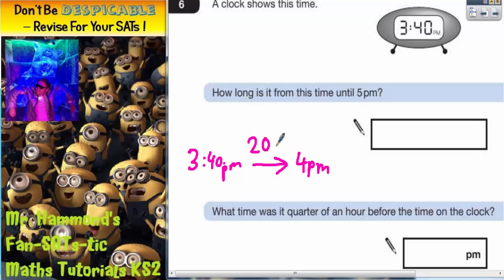that would be 20 minutes, because there are 60 minutes in an hour. So to get from 40 up to the next whole lot of 60 minutes, you would need an extra 20 minutes, and that would take you to 4pm. Then from 4pm to 5pm is one whole hour.